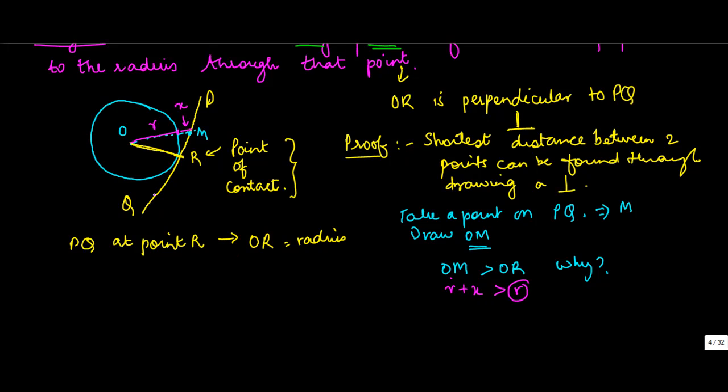Similarly, if you take any other point, let's say M1, then OM1 is going to be greater than OR. Why? Because OM1 is going to be again equal to radius plus, let's say you draw it like this, this is up to radius and let's call this distance as x1.